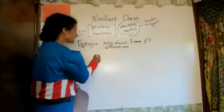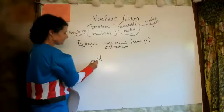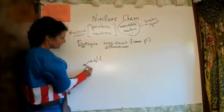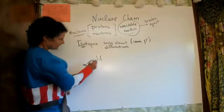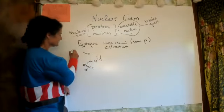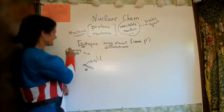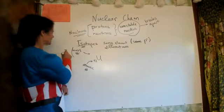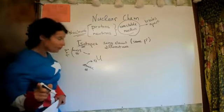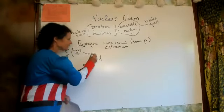If we're talking about uranium, uranium is number 92. The atomic number is always the lower number, and the top number is the mass number. The mass number is protons plus neutrons — it is always a whole number. So let's say uranium-238.